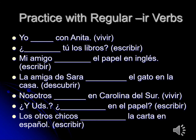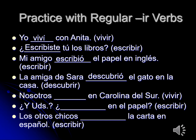Now let's do a little bit of practice with regular IR verbs. Remember that the IR endings in the preterite are exactly the same as the ER endings. Yo viví con Anita — I lived with Anita. ¿Escribiste tú los libros? — Did you write the books? Mi amigo escribió el papel en inglés — my friend wrote the paper in English. La amiga de Sara descubrió el gato en la casa — Sara's friend discovered the cat in the house. Nosotros vivimos en Carolina del Sur — we lived in South Carolina. And remember that's exactly the same in present tense and preterite, so you have to use context there. ¿Y ustedes escribieron en el papel? — And y'all, did you write on the paper? Los otros chicos escribieron la carta en español — the other kids wrote the letter in Spanish.